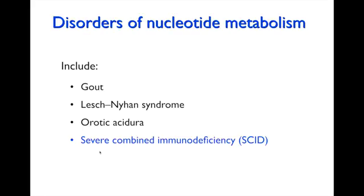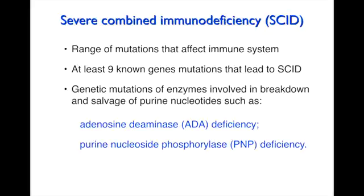There is one disorder we haven't covered: Severe Combined Immunodeficiency, otherwise known as SCID. This is the right place to look at it because it's concerned with the breakdown of nucleotides. There's a range of these syndromes and deficiencies — we know of nine genes involved, though we don't fully understand the whole spectrum. The ones we'll focus on are mutations in adenosine deaminase (ADA) and mutations in purine nucleoside phosphorylase (PNP), both involved in purine degradation.